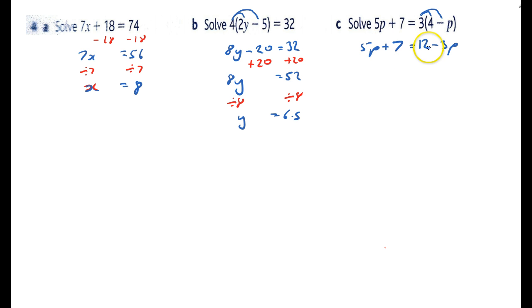Which one's got most p's? Well this one's got 5 and this one's got negative 3, so I'll collect them all on the left hand side. I need to get rid of these minus 3p's, so I'm going to add 3p to both sides. I always do the unknowns first. That'll give me 8p plus 7 equals 12.